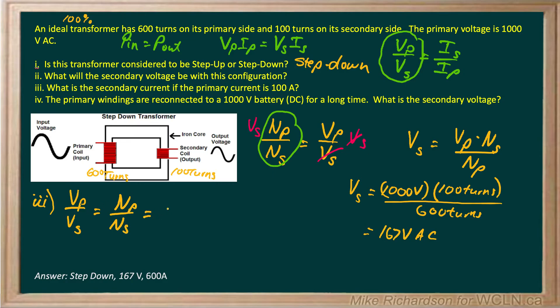But instead of primary being on top, it now switches. I secondary over I primary. And that's what we're going to solve right there. So we get 600 turns divided by 100 turns equals I secondary divided by the primary current which is given as 100 amps. And when I multiply both sides by 100, I end up getting my secondary current is 600 amps.